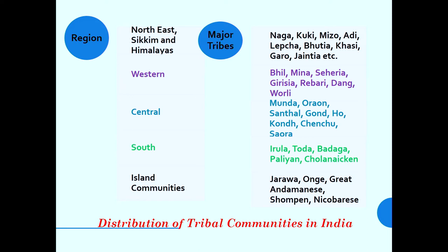For the central region, the tribes are Munda, Oraon, Santal, Gond, Ho, Khunt, Chenchu, Soura — mostly in states like Bihar, Odisha, Jharkhand and West Bengal. For the southern region they are Irula, Toda, Badaga, Pali — mostly belonging to states like Andhra Pradesh, Tamil Nadu and Karnataka. For island communities they are Jarwa, Onge, Great Andamanese, Shompen and Nicobarese.